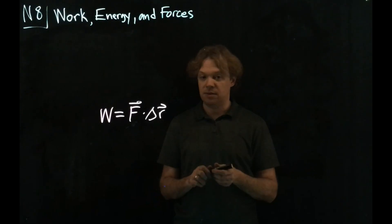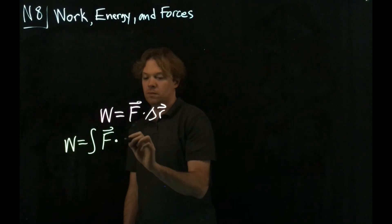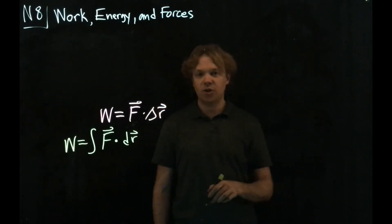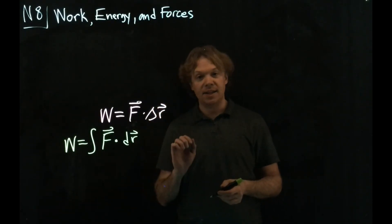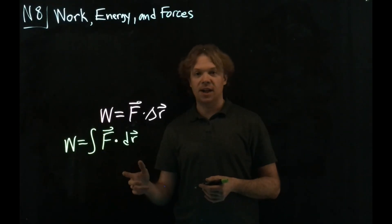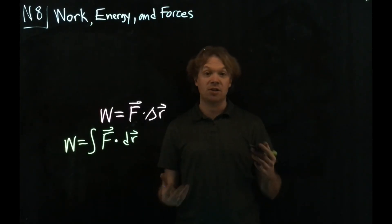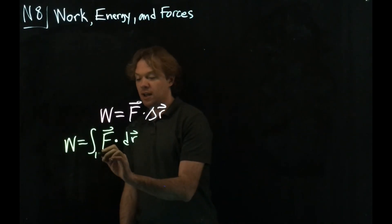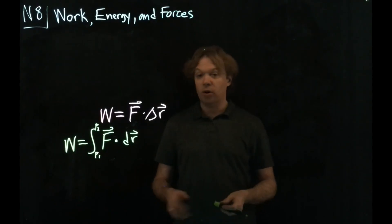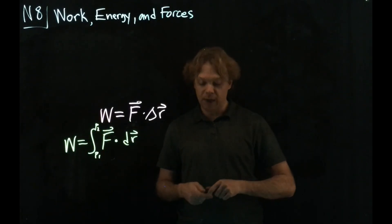What I've done is I've replaced the finite difference delta r with the infinitesimal distance dr, and I've added an integral sign to indicate that I'm going to integrate whatever this quantity is. I should also be more careful. I have to indicate the initial and final points, p1 and p2 as whatever the initial and final points are. Because of this expression, these problems can get quite complicated.